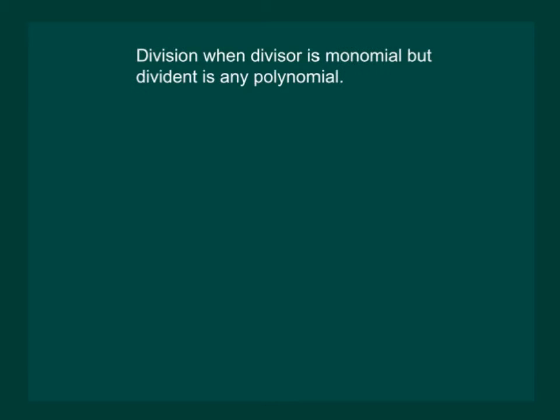Notice that we are canceling the constants like in normal division and we are canceling x also like normal division. Let us now study how to divide a binomial, trinomial or any polynomial with a monomial. Consider 4y cube plus 5y square plus 6y. This algebraic expression has three terms. So it is a trinomial.